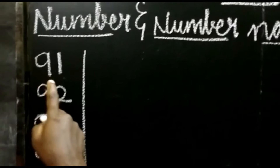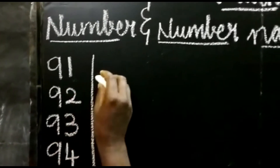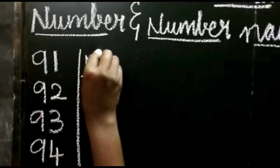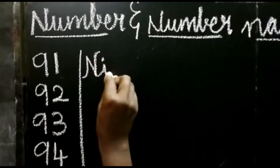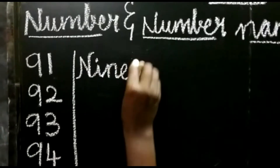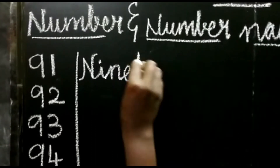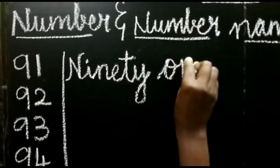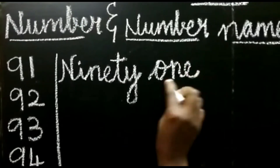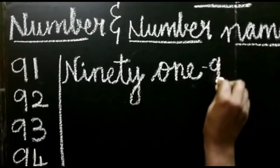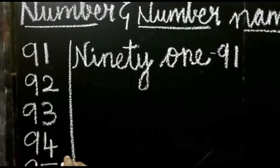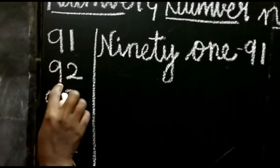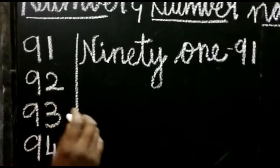Okay, now listen to the number names. Already you have done 90. What is the spelling for 90? N-I-N-E-T-Y. What is the spelling for 1? O-N-E. So 90 + 1 = 91. Then the next number is 92.